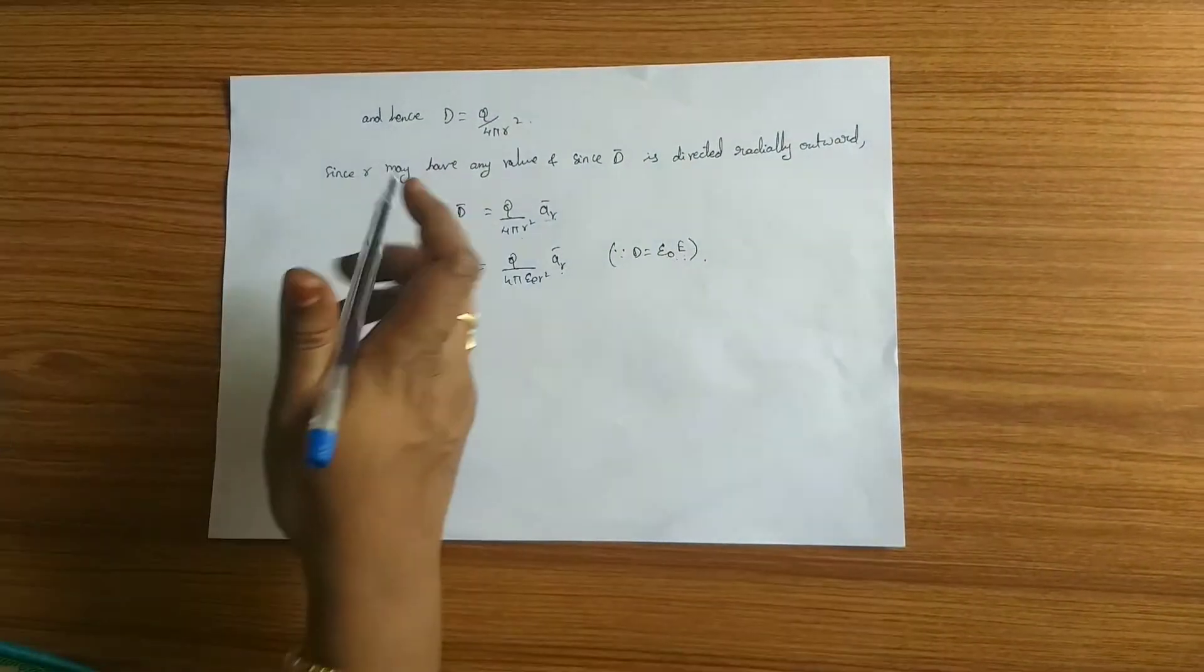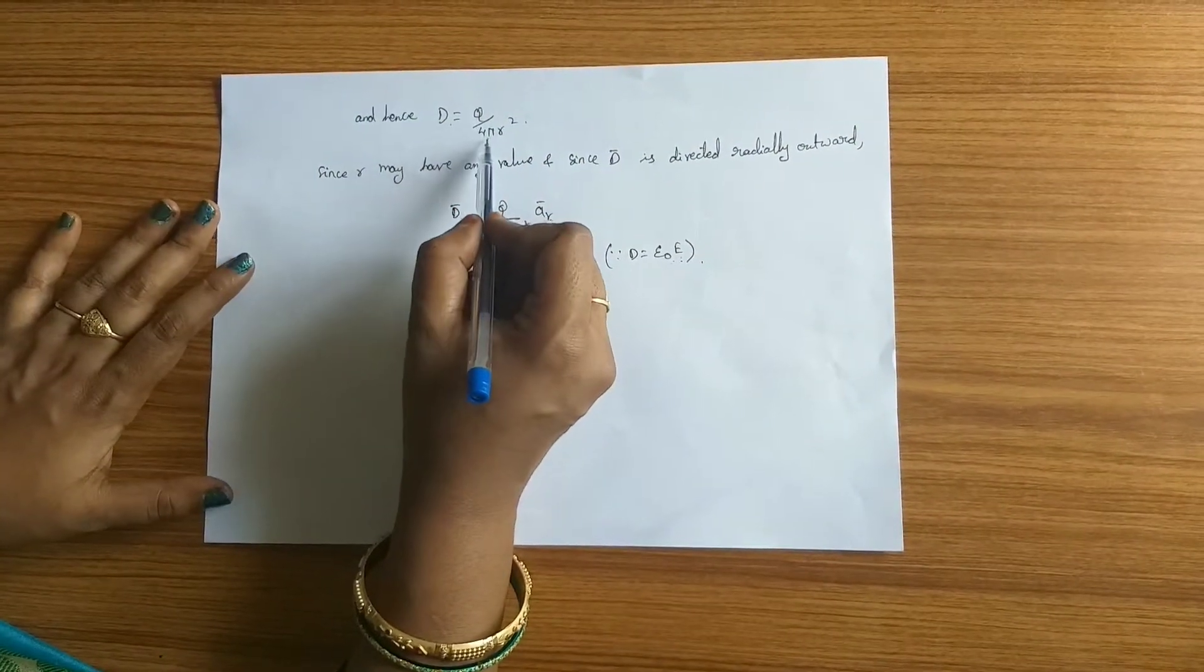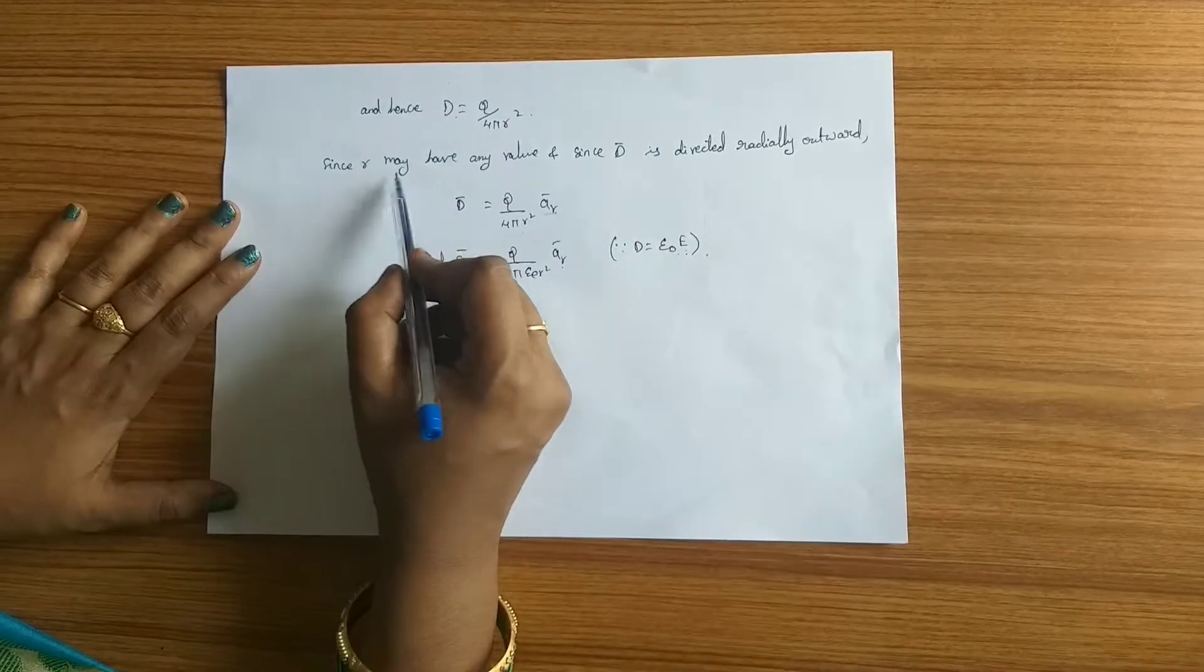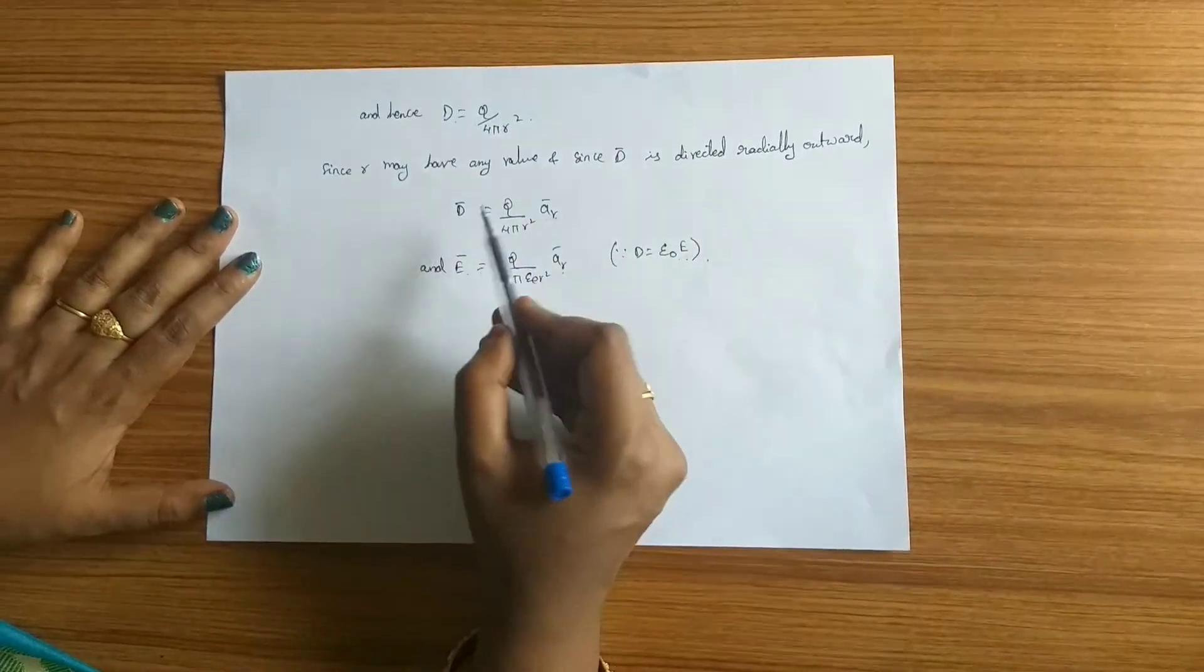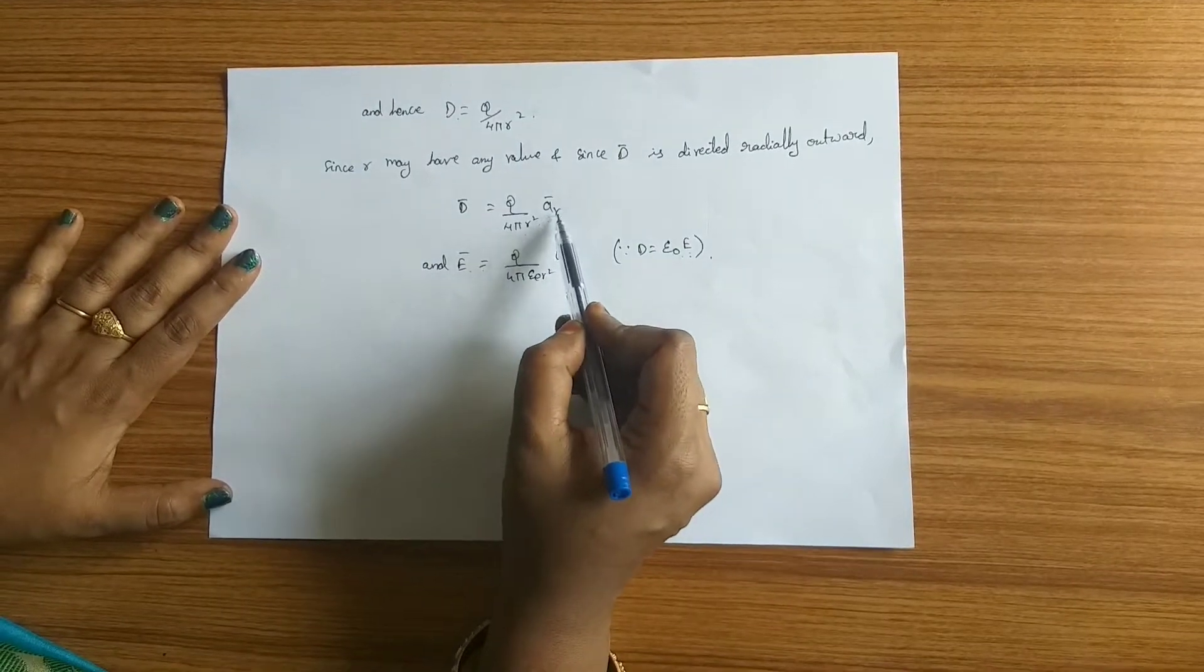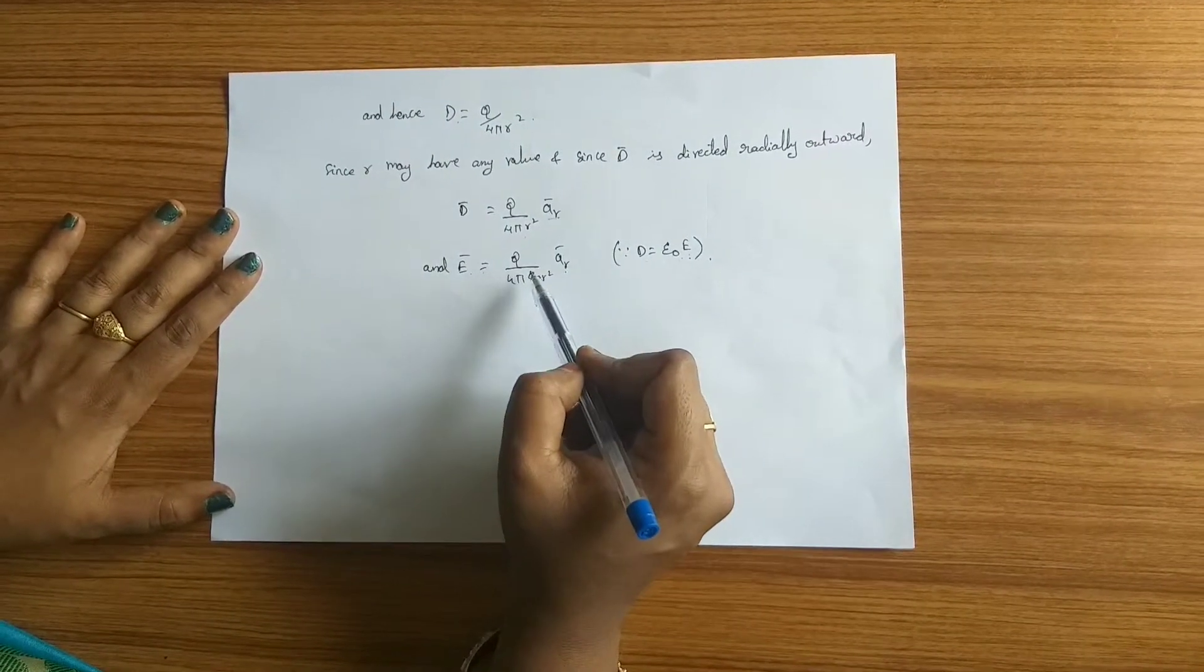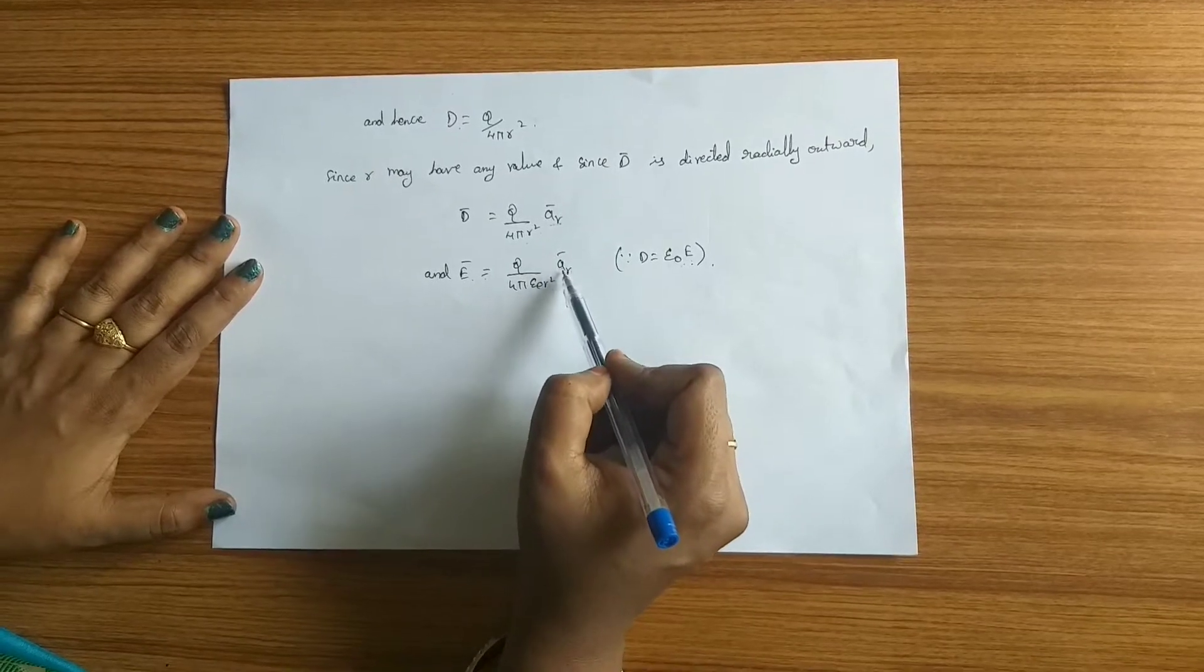From this, D equals q by 4π r squared. Since r may have any value and since D bar is directed radially outwards, D bar equals q by 4π r squared r bar, and E bar equals q by 4π epsilon r squared r bar.